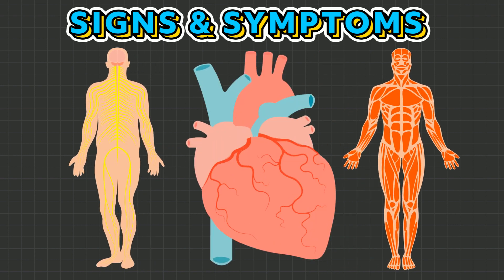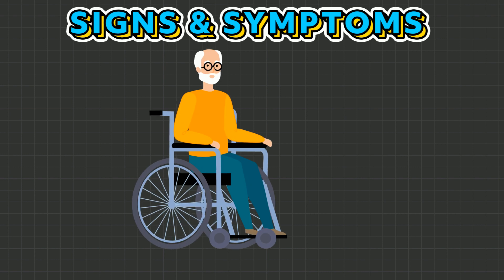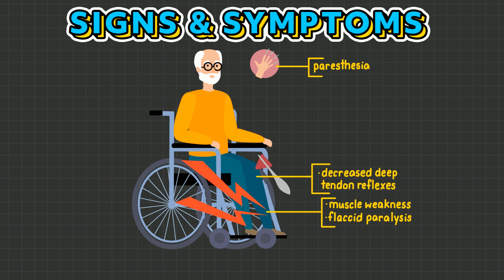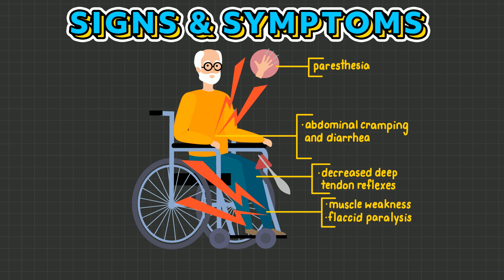Signs and symptoms of hyperkalemia can be split into two categories: neuromuscular and cardiac. Neuromuscular signs and symptoms include paresthesia, which is the most common, muscle weakness that can progress to flaccid paralysis, decreased deep tendon reflexes, and abdominal cramping, diarrhea, nausea, and vomiting, as hyperkalemia causes hyperactivity of smooth muscles.